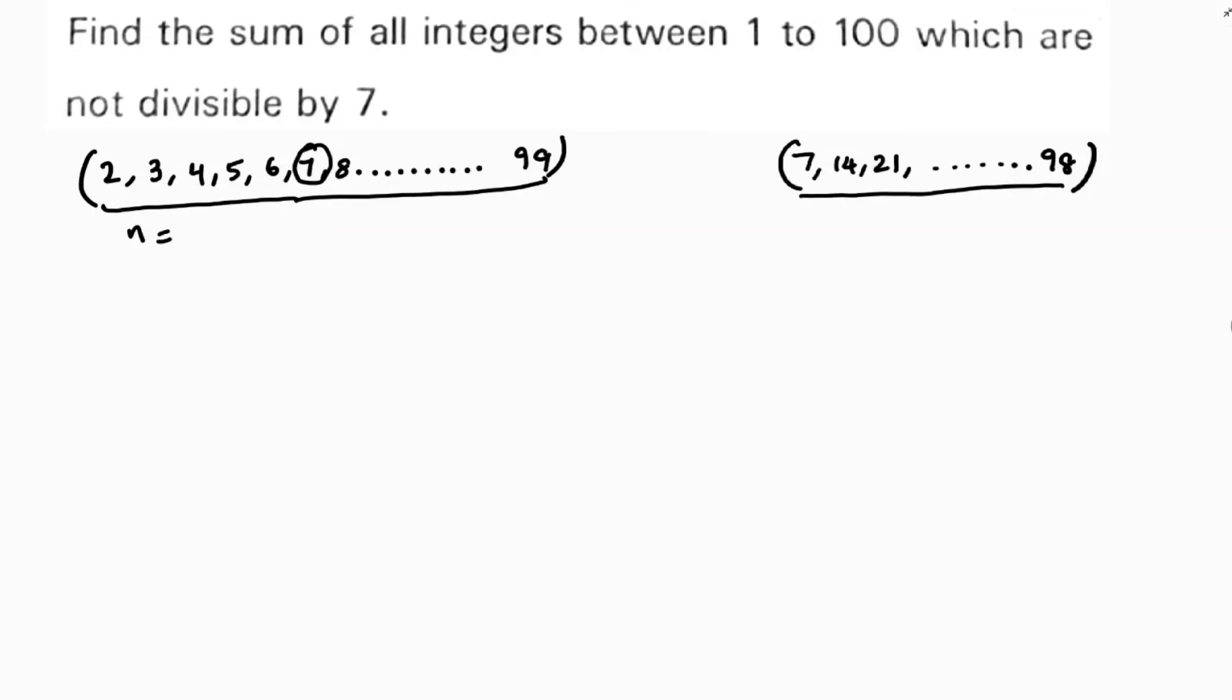How to do it? See, this is the series. So last term minus first term plus 1. So it's 97 plus 1. 98 terms are the total.